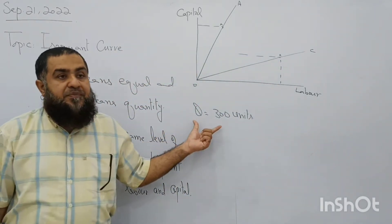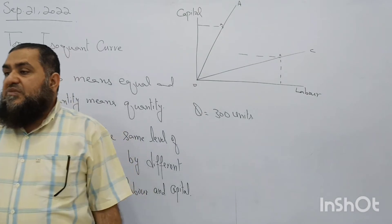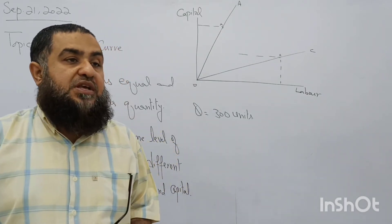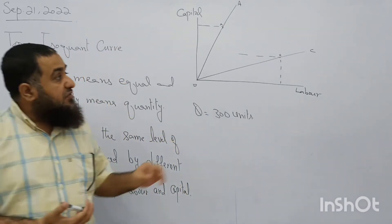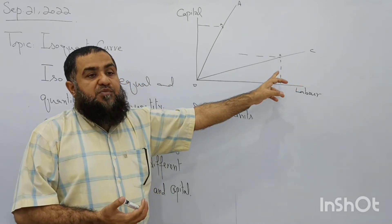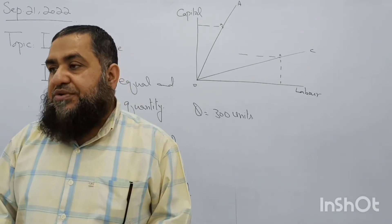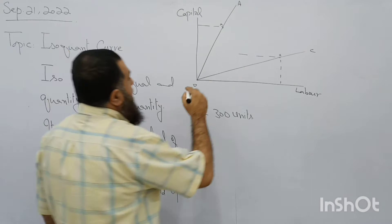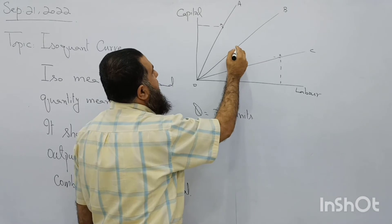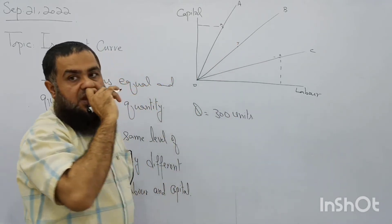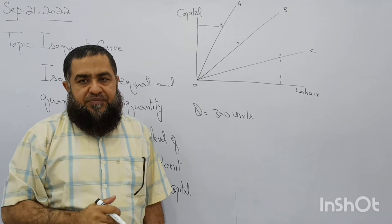At point Z, the output level is still 300 units. Method A is called the capital-intensive method, where capital is proportionately more in the production function to produce 300 units. Method C is the labor-intensive method, where more labor is employed than capital to produce the same output. In between these two, we have Method B at point Y, which uses almost equal proportions of labor and capital to produce the same level of output.